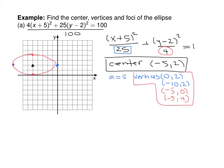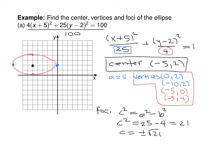For the foci: c² = a² minus b² = 25 minus 4 = 21, so c = ±√21. The foci are √21 units left and right of the center along the horizontal axis, giving coordinates (−5 ± √21, 2).